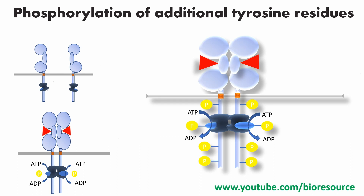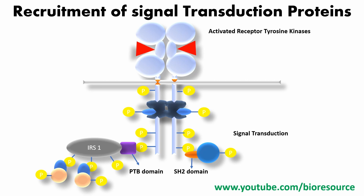This leads to further addition of phosphorylation to the additional tyrosine residues. As you can see, multiple phosphate groups are added to the different tyrosine residues and the receptor becomes fully active. Once the receptor tyrosine kinase is fully phosphorylated, there is signal transduction.